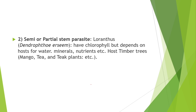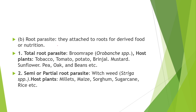Second is semi or partial stem parasite — example Loranthus. They have chlorophyll but depend on host for water, minerals, and nutrients. Their hosts are timber trees such as mango, tea, and teak. Second is root parasite — attached to roots to derive nutrition. Classified into total root parasite (example Orobanche species, host plants tobacco, tomato, potato, brinjal, mustard) and partial root parasite — witch weed (Striga species), whose host plants are millet, maize, sorghum, sugarcane, and rice.